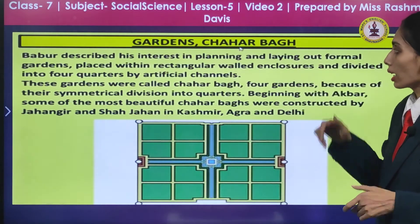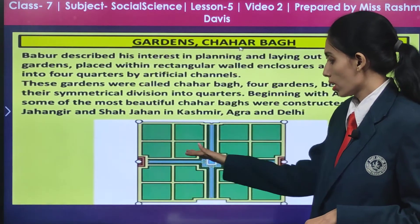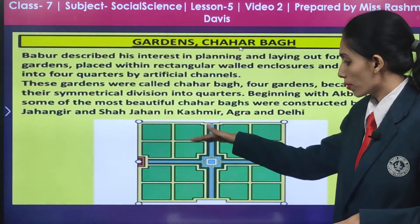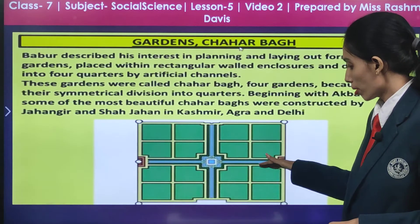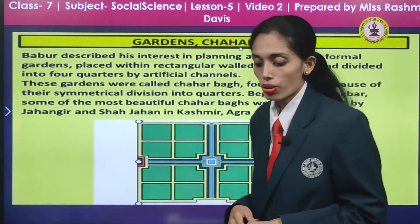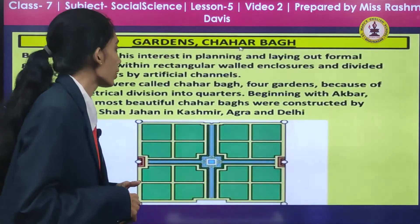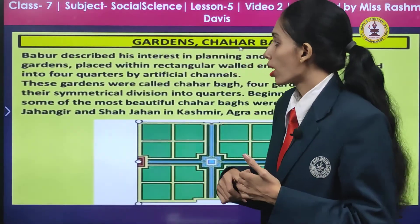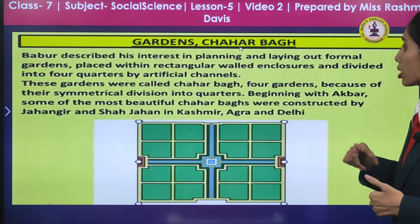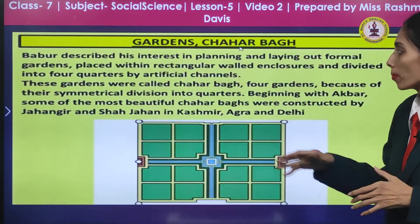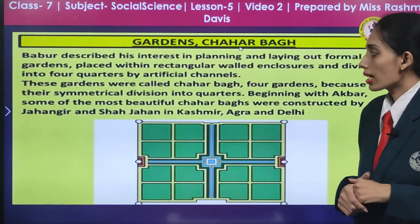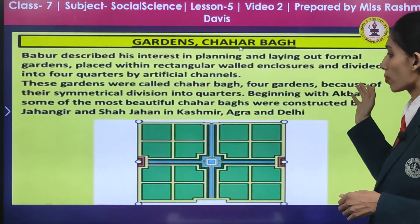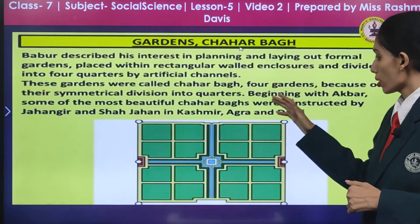Then we are going to talk about the gardens, that is the charba. You can see this division with the channel of flow of water which has been passed. There are four gardens, different portions, and then you can come to the centre — that is why it is termed as charba. Babur had described his interest in planning and laying out formal gardens placed within rectangular walled enclosures divided into four quarters by artificial channels. These gardens were called charba, meaning four gardens because of their symmetric division into quarters.